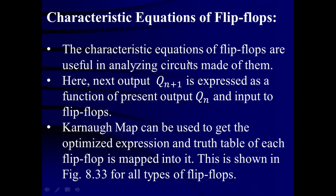The characteristic equation of the flip-flop is useful in analyzing circuits made of them. The next output Qn+1 is expressed as a function of present output Qn and input to the flip-flop. The Karnaugh map can be used to get the optimized expression, and the truth table of each flip-flop is mapped into it, as shown in figure 8.33 for all types of flip-flops. Here we are going to utilize the Karnaugh map.